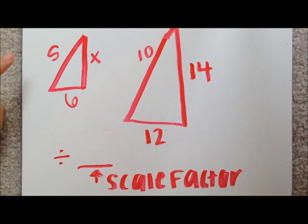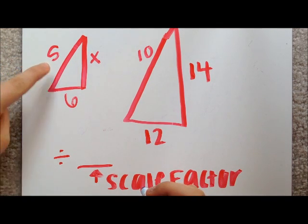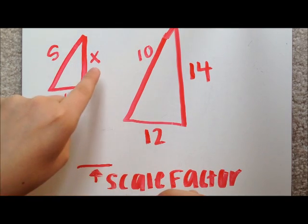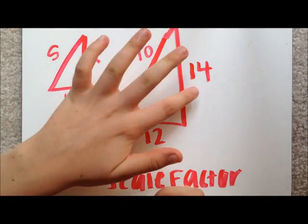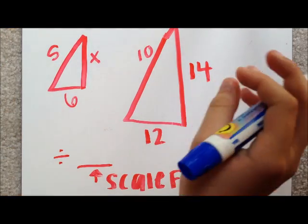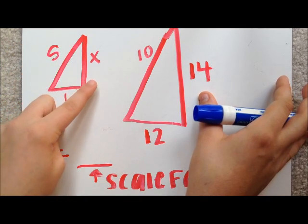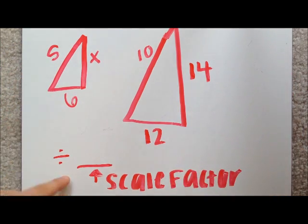Here is an example. So we know that the Scale Factor is going to be 2 because 5 times 2 is 10, 6 times 2 is 12, and X times 2 is 14. Since we're not trying to solve the X on this side, we're trying to solve the X on this side, we have to divide by the Scale Factor. So we're dividing by 2.